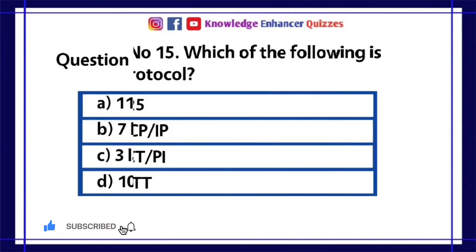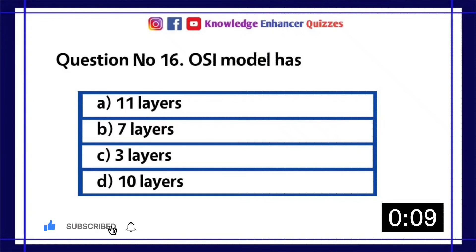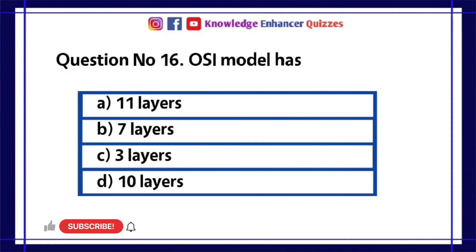Question number 16. OSI model has. A 11 layers. B 7 layers. C 3 layers. D 10 layers. Option B is the right answer.